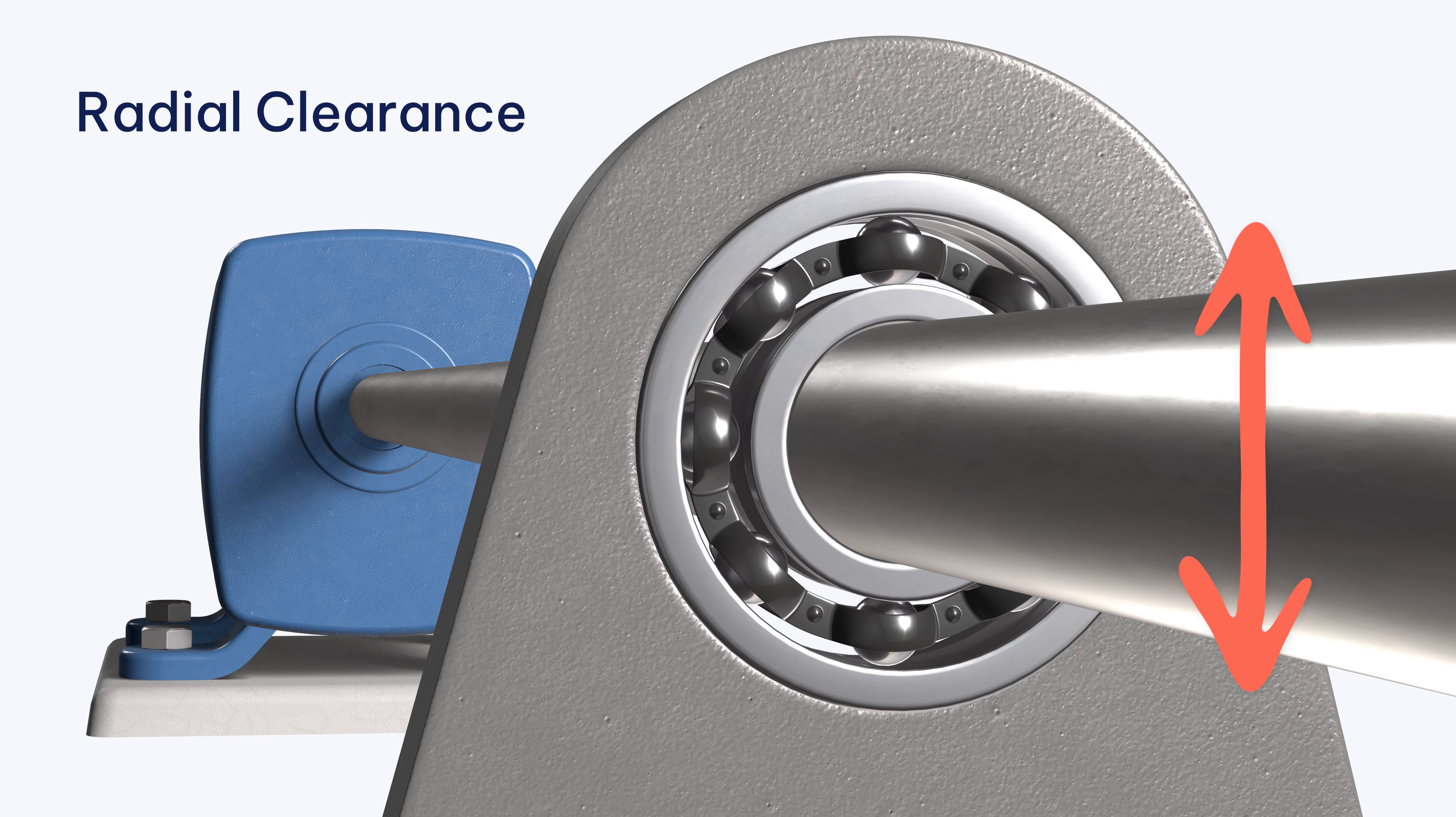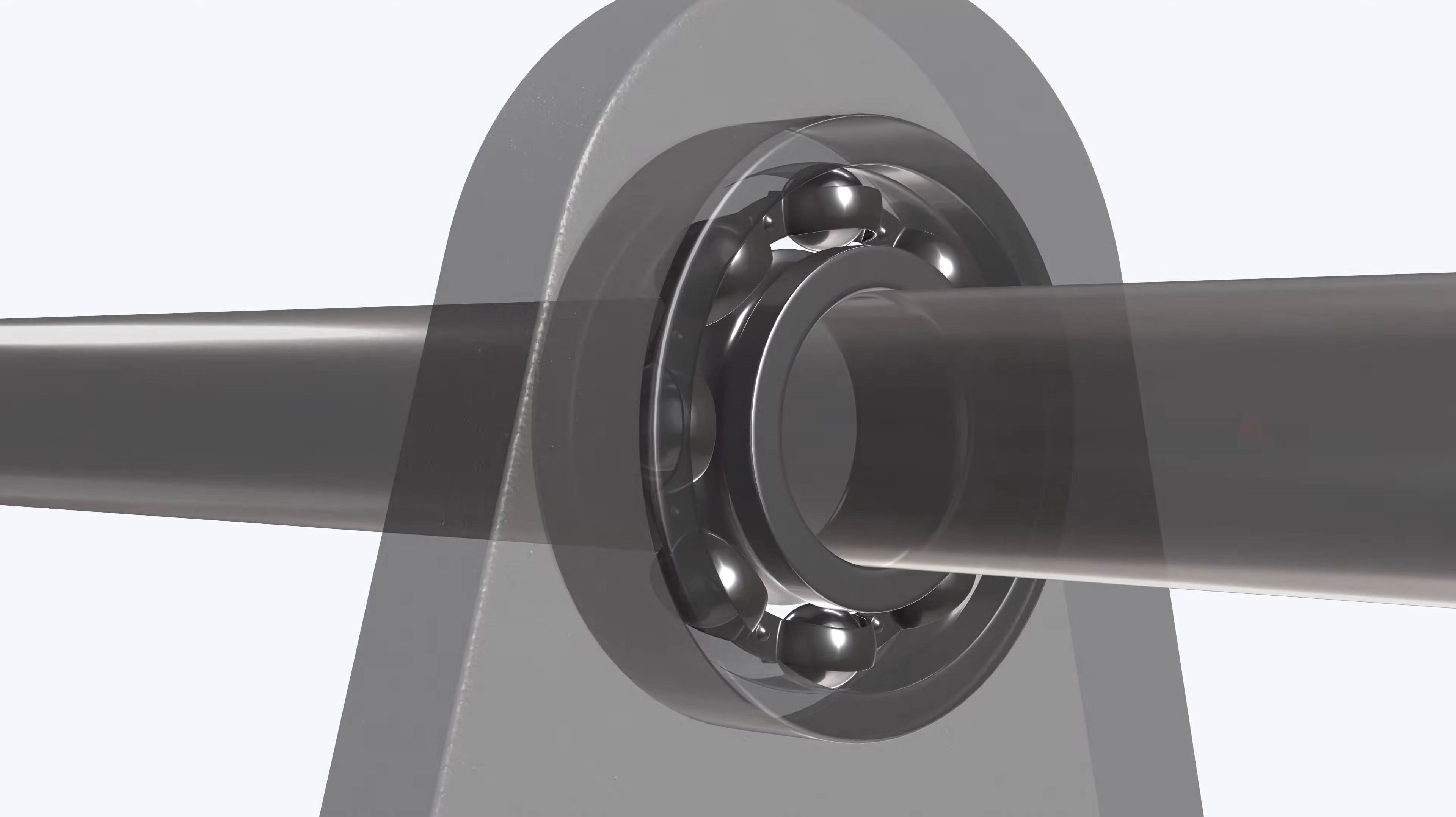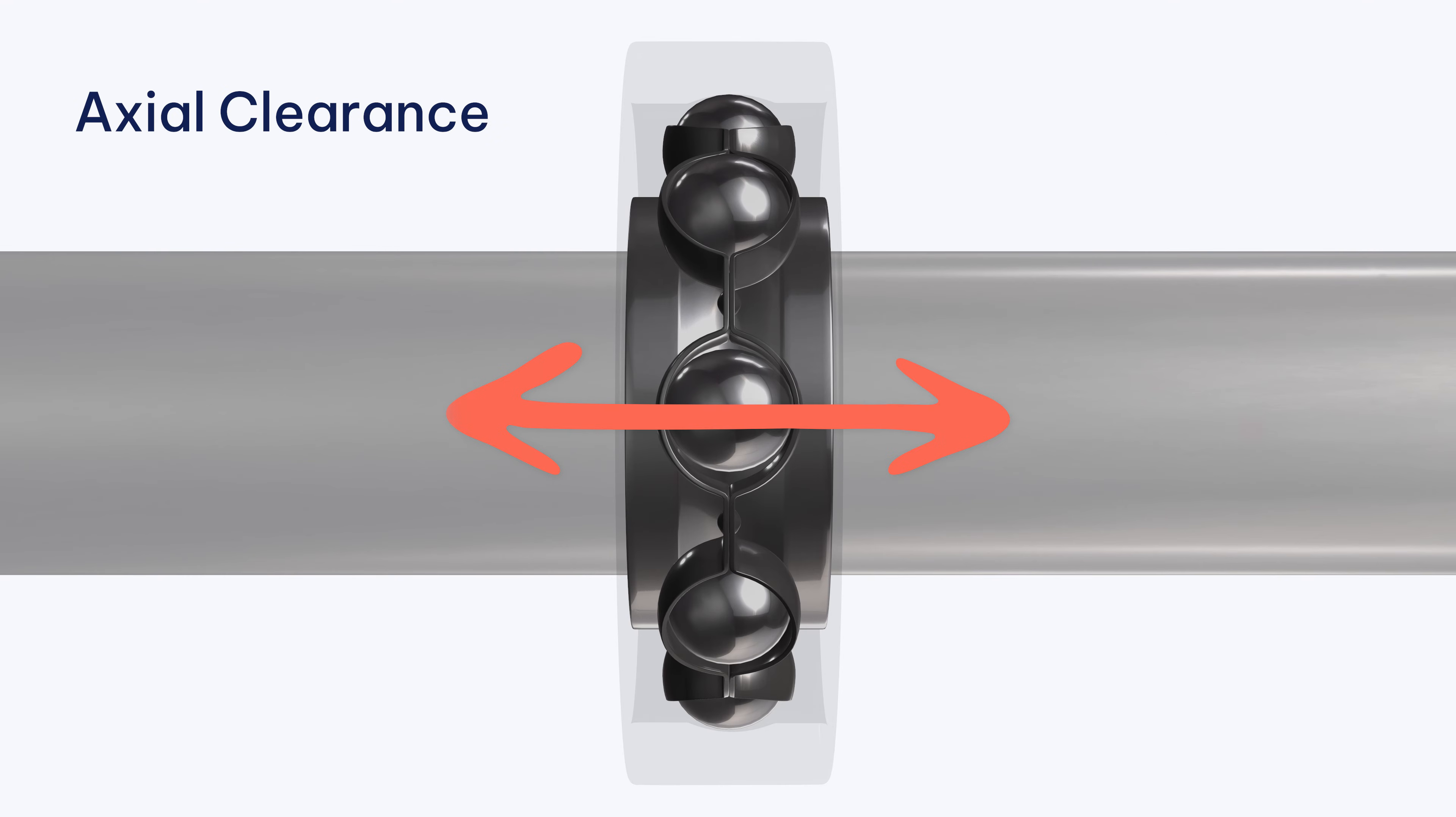Radial clearance is the play that exists perpendicular to the shaft. Some bearings also have axial clearance, which is play that exists parallel to the shaft.